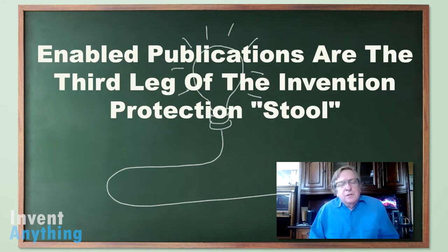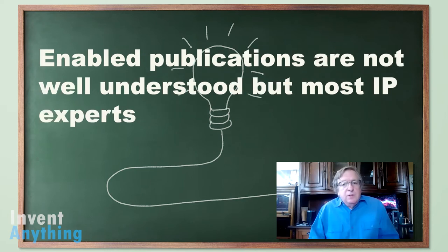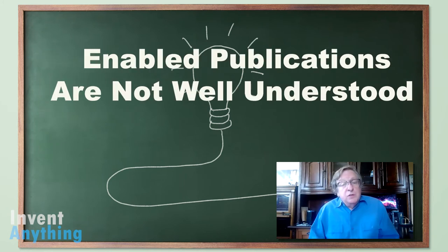I think of Enabled Publications as the third leg of the stool. Patents is one leg, trade secrets is the second leg, and Enabled Publications is the third leg. Using these three legs of intellectual property coverage, you'll have enormous coverage to make your IP portfolio much more valuable. I know there are many experts out there in IP strategy, but Enabled Publications doesn't seem to come up that much. To differentiate yourself and up your game in IP strategy, this episode on Enabled Publications is for you.